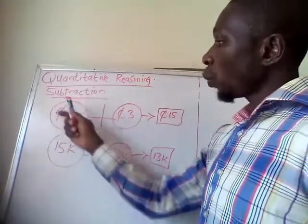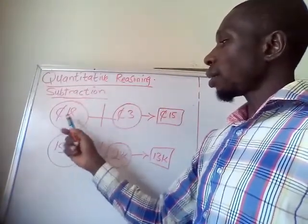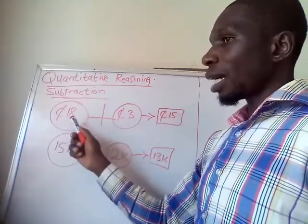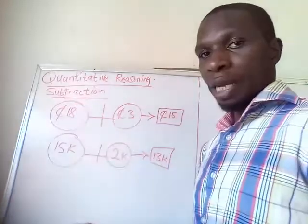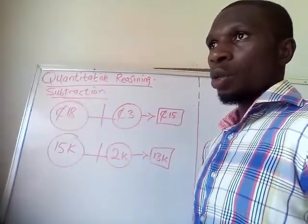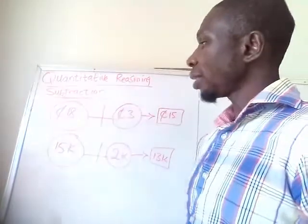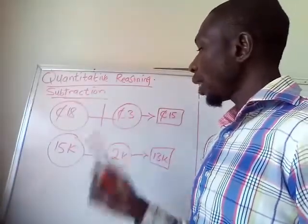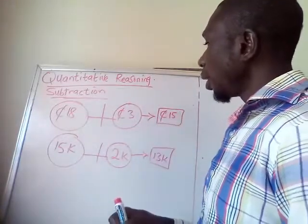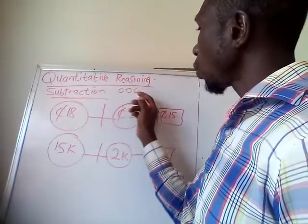The first one here is 18 cent minus 3 cent. With subtraction, if you have 18 objects — money, stones, cars, or anything you can think of — and you take away or remove 3 out of 18, you have 15 remaining.